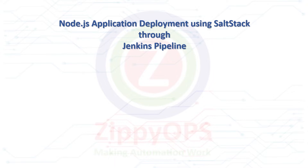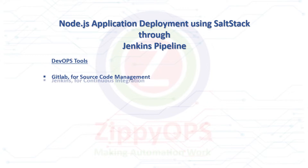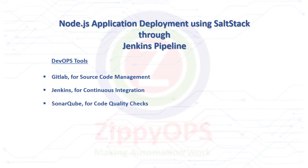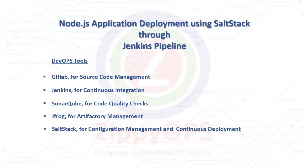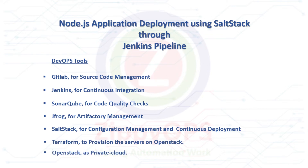The complete process is orchestrated through a Jenkins pipeline. The tools used in this Node.js application deployment are: GitLab for source code management, Jenkins for continuous integration, SonarCube for code quality checks, JFrog Artifactory to manage the binaries, SaltStack for configuration management and continuous deployment, Terraform to provision the servers on OpenStack, and OpenStack as the private cloud.